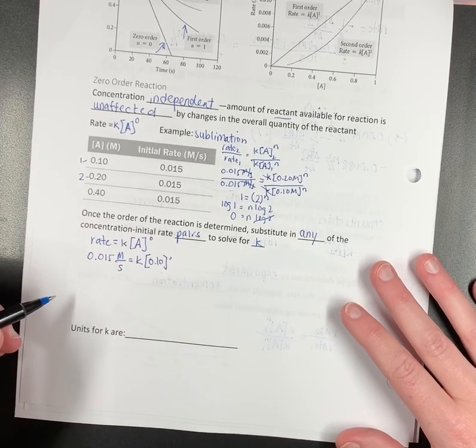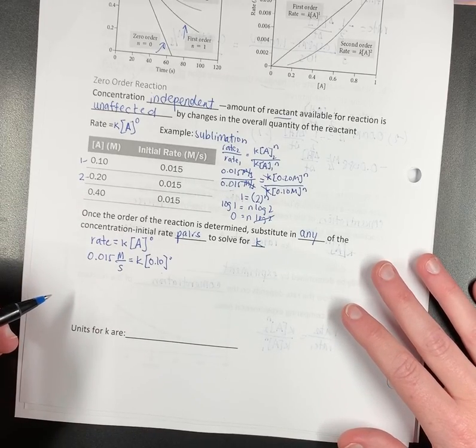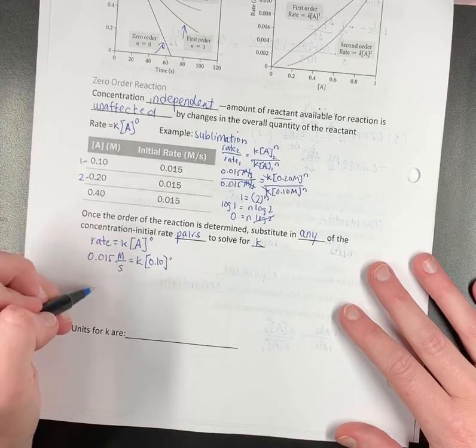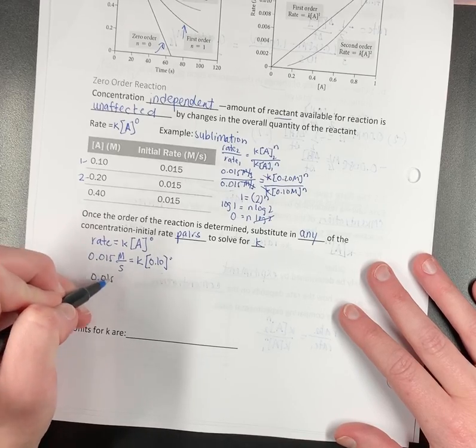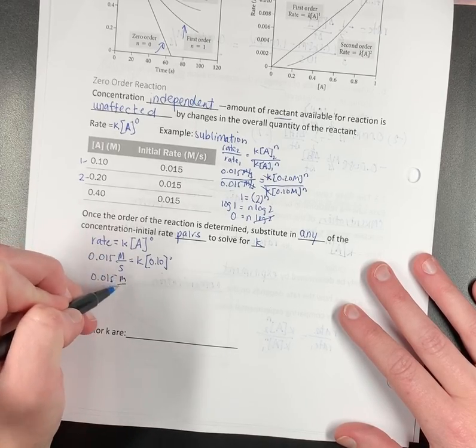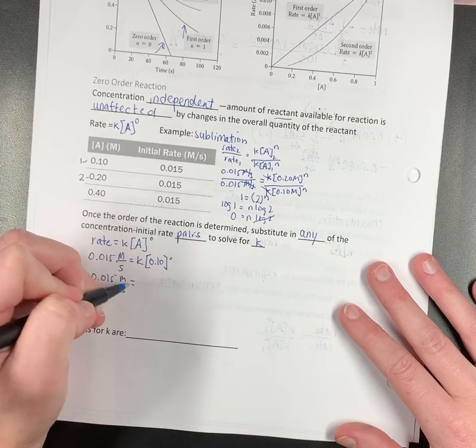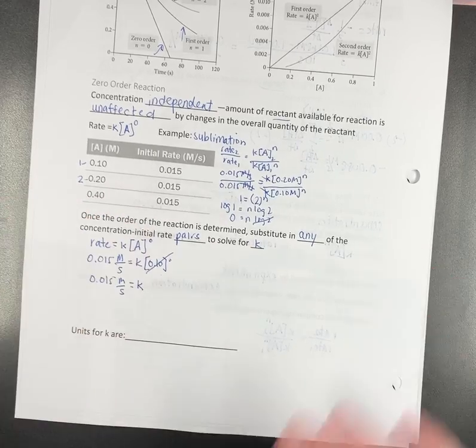Because this is one, right? We all agree that anything to the zero power is one. Yes? Okay, good. I would be concerned for your mathematics if we do not agree with that. So that's one that goes away.